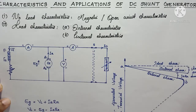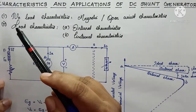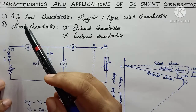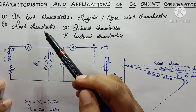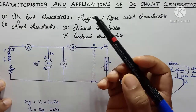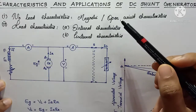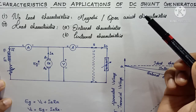In this video, we are going to discuss some important characteristics of DC shunt generators and their applications. Mainly there are two types of characteristics: no-load characteristics and load characteristics. The no-load characteristics is also known as magnetic characteristics, open circuit characteristics, or simply OCC.